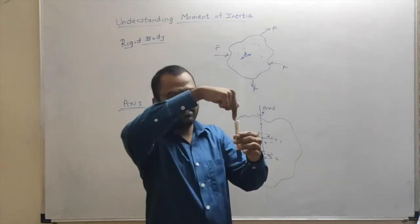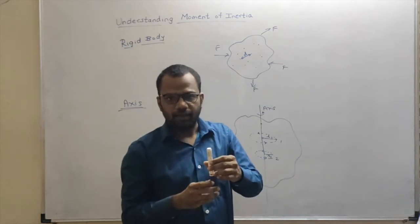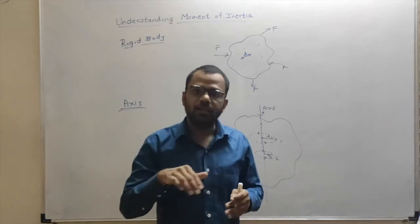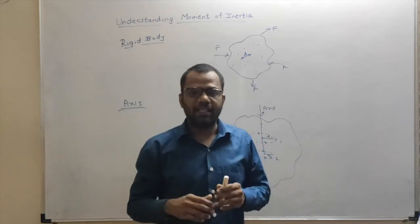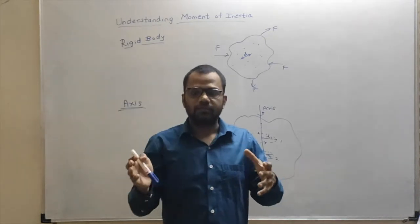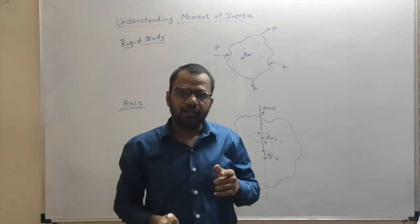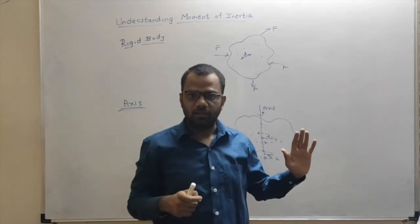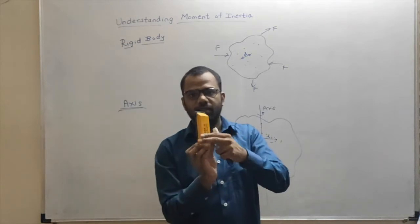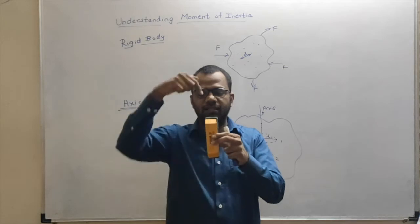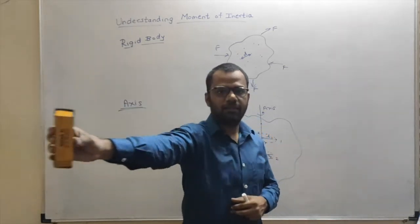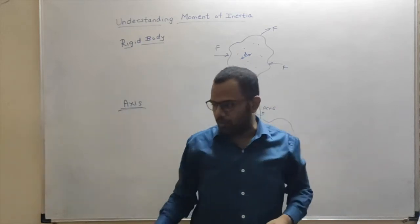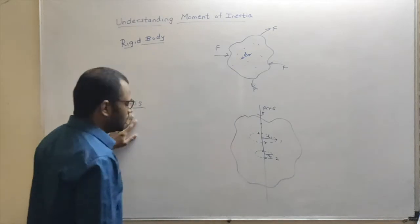For example, if I rotate this pen like this, its axis of rotation passes through its center. Our Earth performs two types of rotational motion simultaneously: one is rotation about itself, where the axis passes through its own center; and the other is rotation around the Sun, for which the axis passes through the center of the Sun. If I rotate this duster in one manner, the axis of rotation passes through it in one direction; but if I rotate it differently, the axis passes through my shoulder.